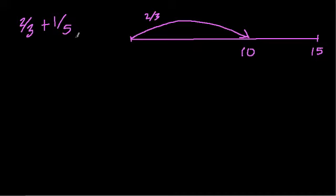One-fifth, five goes into 15 three times, so one-fifth will hop up three. And that brings you to 13. So if I add these two, what I really get is 13 out of 15.